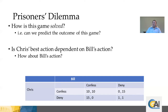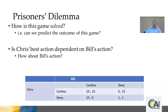Regardless of what we assume about Bill's behavior, confessing is the better option for Chris. If Bill confesses, confessing gets Chris 10 years instead of 15. If Bill denies, confessing gets Chris zero years instead of one. We have a particular name for this type of situation: we say that Chris has a dominant strategy of confessing, because confessing gets him a better outcome than denying regardless of what Bill does.